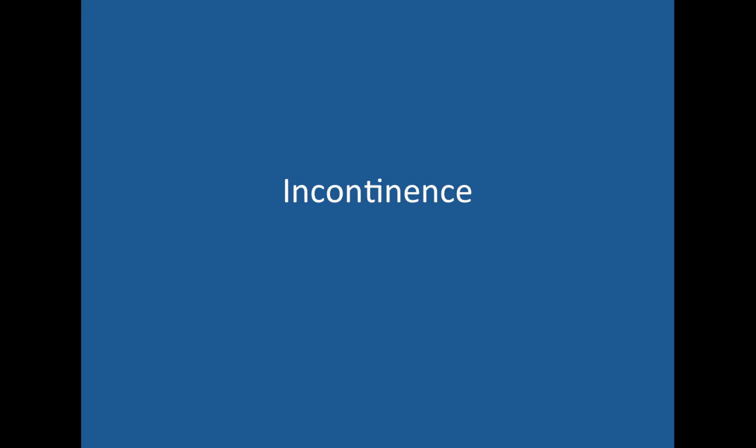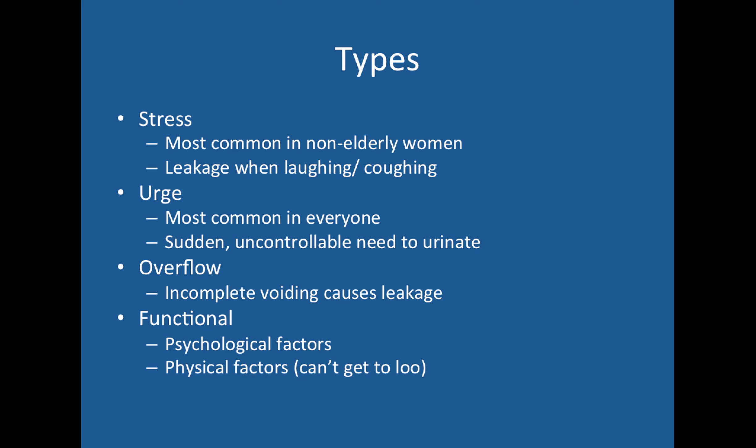Let's talk about incontinence. There are four types, and the most important are stress and urge. Stress incontinence tends to happen in younger women — urine leakage when laughing, coughing, or when intra-abdominal pressure increases. Urge incontinence is the most common overall — not just in younger women but in older women and men — and involves a sudden and uncontrollable bladder contraction. Overflow incontinence is due to incomplete voiding, where urine builds up until leakage occurs. Functional incontinence is not an organic cause but something like the patient being unable to get to the bathroom.